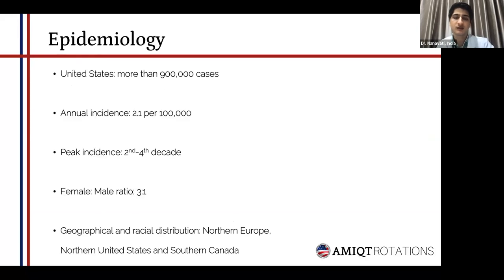Regarding the epidemiology, in the United States there are more than 900,000 cases of multiple sclerosis. The annual incidence is 2.1 for every 100,000 cases. The peak incidence is usually around 20 to 40 years of age, or the second to fourth decade of life. The female to male ratio is 3 to 1. Regarding geographical and racial distribution, it is more commonly found in populations from Northern Europe, Northern United States, as well as Southern Canada.